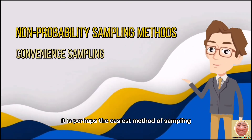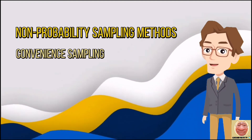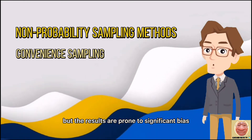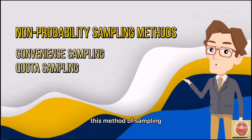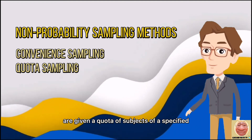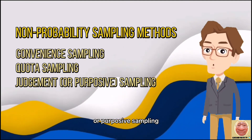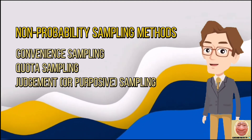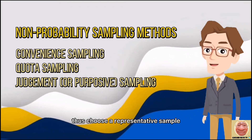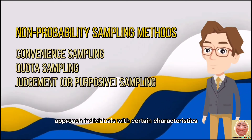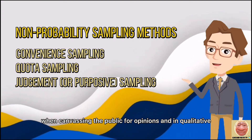First is convenient sampling, perhaps the easiest method, where participants are selected based on availability and willingness to take part. Results are prone to significant bias because those who volunteer may differ from those who do not. Next is quota sampling, often used by market researchers, where interviewers are given a quota of subjects of a specified type to recruit. Judgment or purposive sampling, also known as selective or subjective sampling, relies on the researcher's judgment when choosing participants. Researchers may choose a representative sample to suit their needs or approach individuals with certain characteristics. This approach is often used by the media when canvassing public opinion and in qualitative research.